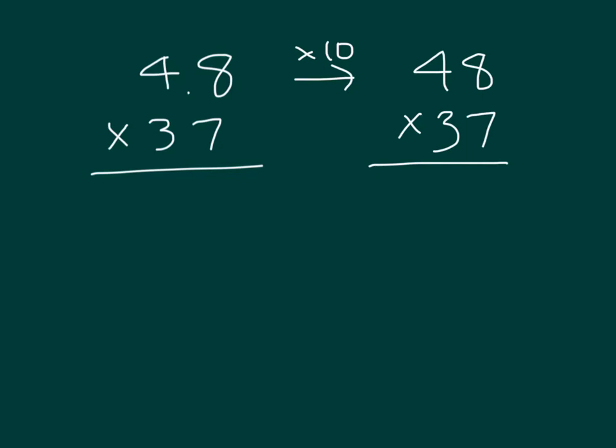So if we figure out that first, we get 336, place a 0, and then 1440. Adding those together gives 1776, but this number here is 10 times more than what our actual answer would be.